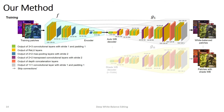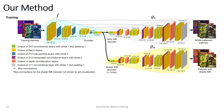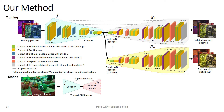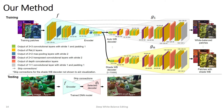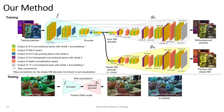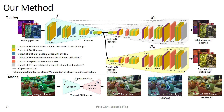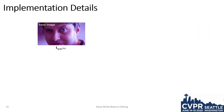We can also train other decoders. Here we show a decoder trained to produce outputs corresponding to a white balance setting of a shade illumination. At testing time, we use this encoder multi-decoder framework to process an arbitrary image. The image is encoded with F and then decoded with one of the G decoders. Here we show the image processed with the decoders for auto white balance, incandescent white balance, and shade white balance. At testing time, we use the following implementation.